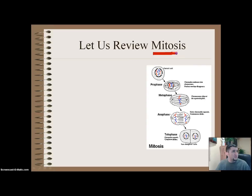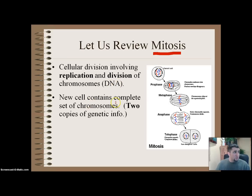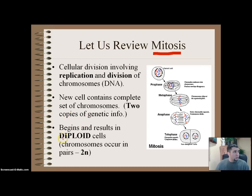Now I want to take a second to review the process called mitosis. Mitosis is a type of cellular division that involves replication and division of chromosomes. Every new cell has a complete set of chromosomes, which means we have two copies of genetic information. Having two copies is what's normal — that's called being diploid, assigned 2N. If we only had one copy of genetic information, that would be haploid, assigned the letter N.